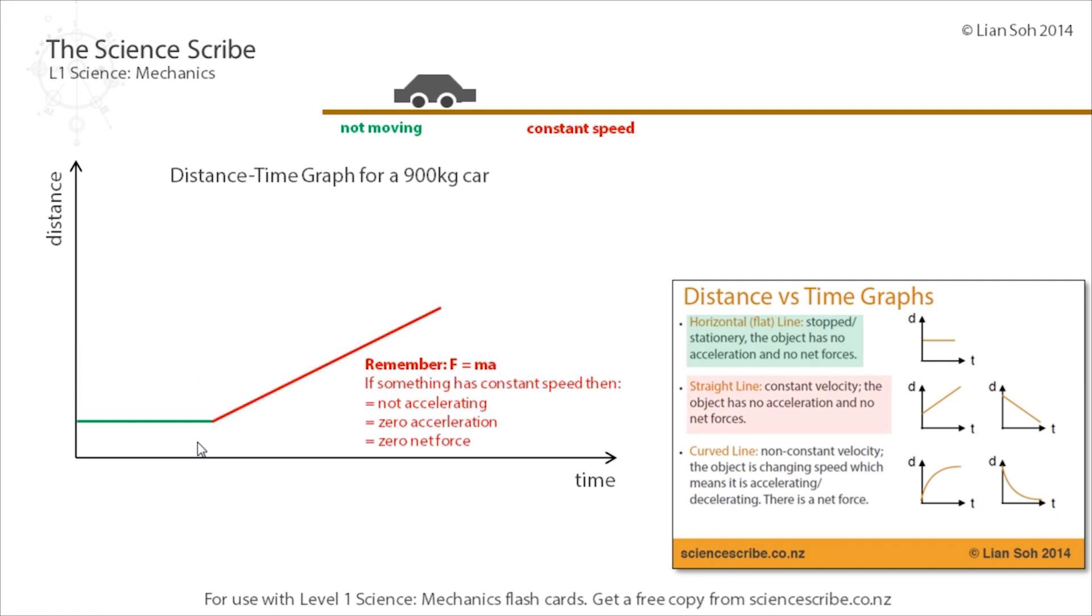If I have a straight line which has some steepness to it, then that means there is some constant speed for that vehicle. If it's got a constant speed, it means that its distance is going to be increasing or decreasing at a steady rate.